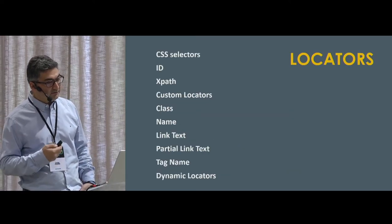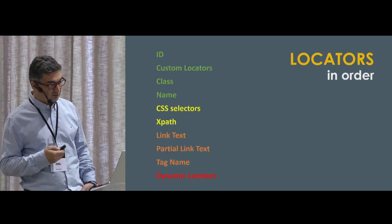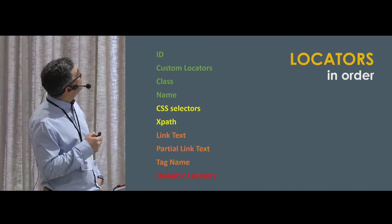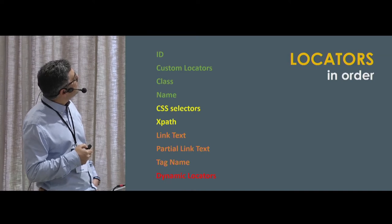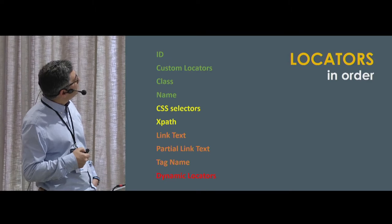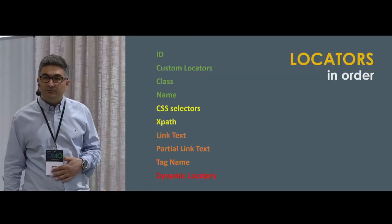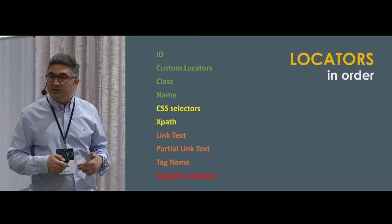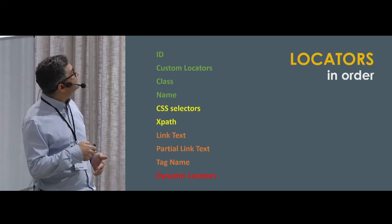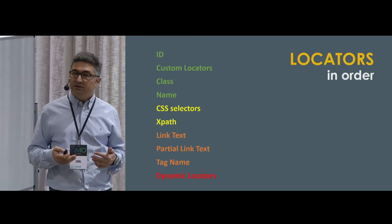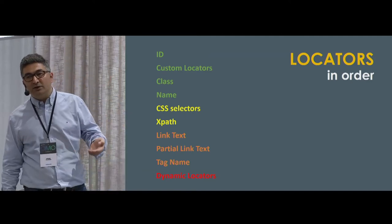Locators — we sort them in order. It's best to use ID attributes, custom locators, and class name. I don't suggest using XPath. Custom locators: you can give an attribute in your HTML DOM — for example, you can name it 'automation' — and you don't expose it to production code. Sometimes CSS class or ID can change, but you can give attributes to them and call them uniquely.